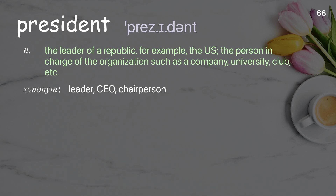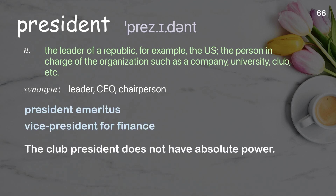President — the leader of a republic, for example, the U.S.; the person in charge of an organization such as a company, university, or club. Examples: president emeritus, vice president for finance. The club president does not have absolute power.